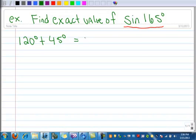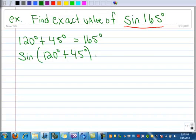You could pick something different as long as they add up or subtract to give you 165. So I can rewrite this as the sine of the sum of 120 plus 45. And now I'm ready to expand this.